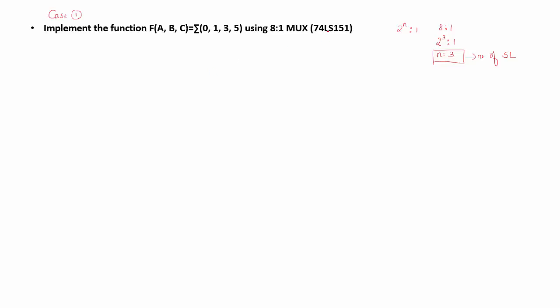First I have to draw the logic symbol for 74LS151. If I represent the 74LS151 IC by this block, I know it has two outputs Y and Y bar, three select lines S0, S1, S2, and one active low enable input E bar.